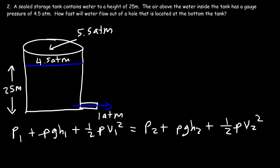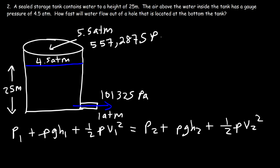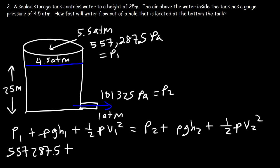We need to convert the atm values into pascals. 1 atm is 101,325 pascals. So 5.5 atm is 5.5 times 101,325, which is 557,287.5 pascals — that's the absolute pressure at the top, p1. Point B is at ground level, so h2 is 0 and we don't need that term. Point A is 25 meters above ground level, so h1 is 25.